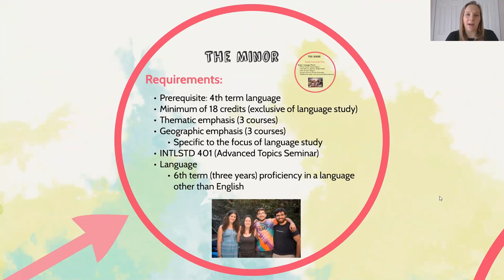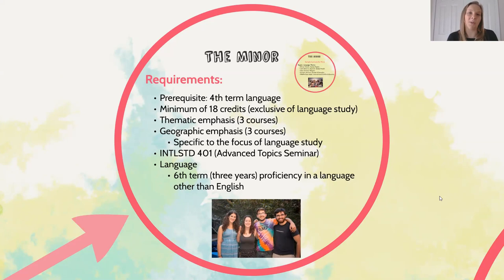The minor encompasses international problems in a different way. The sixth-term language requirement still applies outside of the 18 minor credits. Those 18 credits are distributed across three basic requirements: a thematic emphasis of three courses, a geographic emphasis focused on your region of language, and the International Studies 401 seminar. This minor has been added to all types of LSA majors and even by students in the School of Business.